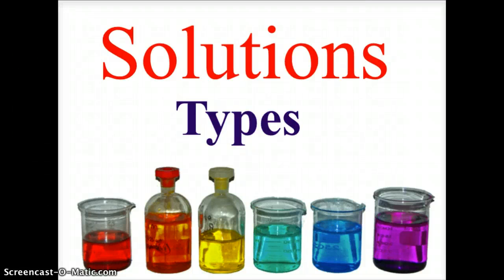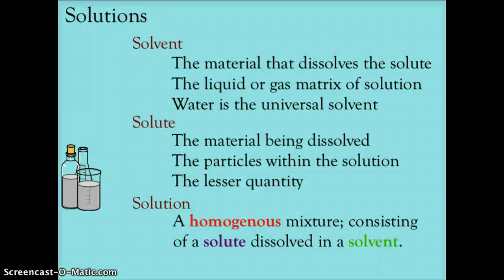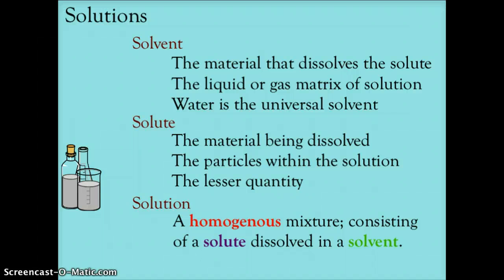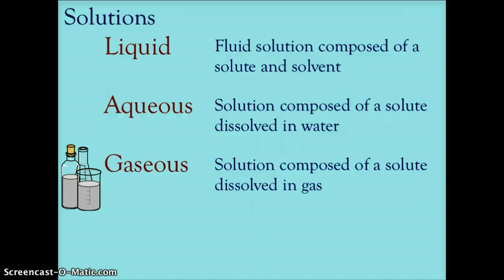Let's look at types of solutions. First, let's review: for a solution you have the solvent, the material that's dissolving the solute. This is usually a liquid or gas in matrix, and water is the universal solvent. The solute is the material being dissolved — the particles within the solution — and this is usually the lesser quantity. A solution is a homogeneous mixture consisting of a solute dissolved in a solvent.